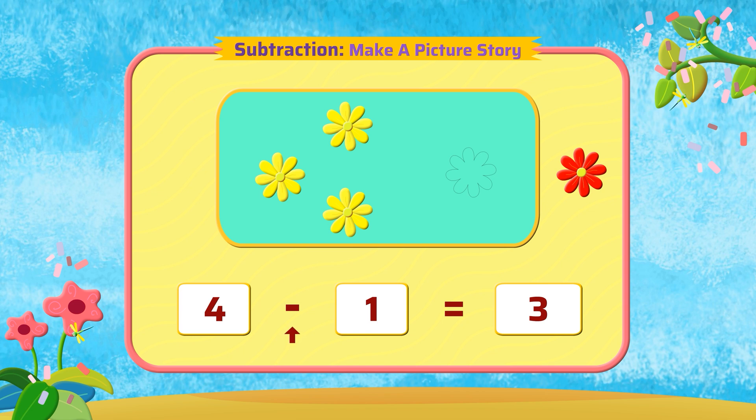We use the minus symbol for subtraction, and this is the symbol for equal to. So, we write it as four minus one equal to three. The answer is three yellow flowers.